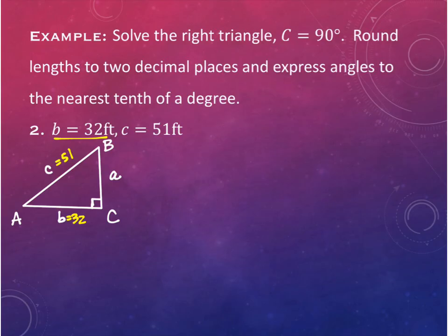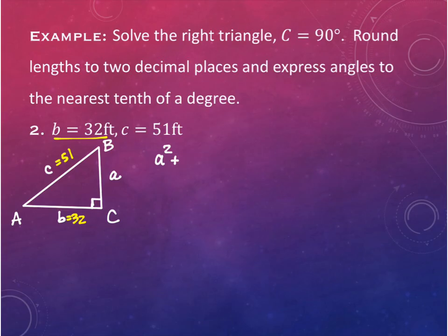Let's start with the missing side. When we have two sides given, we use the Pythagorean theorem. Our sides are A and 32, and the hypotenuse is 51. So we have A squared plus 32 squared equals 51 squared.